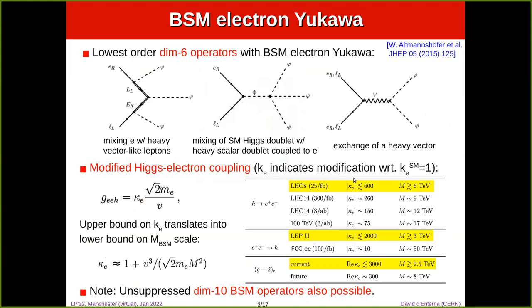In principle the electron gets its mass through coupling to the Higgs doublet, but there are BSM ways by which the electron can get its mass: by mixing with heavy vector-like leptons, with a Higgs doublet, with a heavy scalar doublet, or with a heavy vector. In any case, the current Higgs-electron coupling limits are very weak. From the study looking for Higgs to e+e- on top of the huge Drell-Yan background at the LHC, CMS was able to set a limit at 600 times the standard model value. The electron g-2 can constrain the real part of the Yukawa.